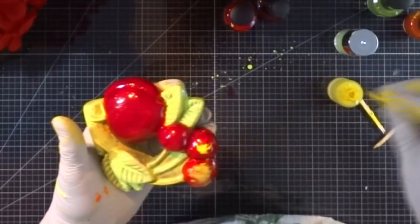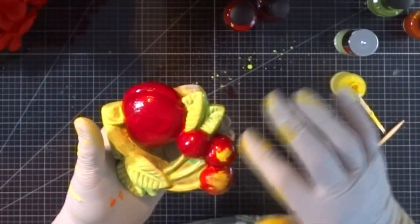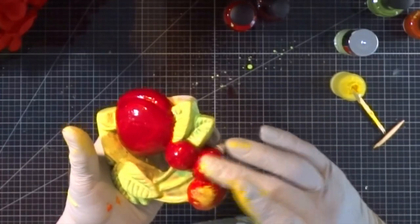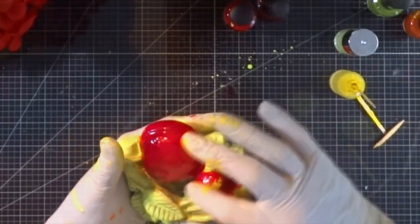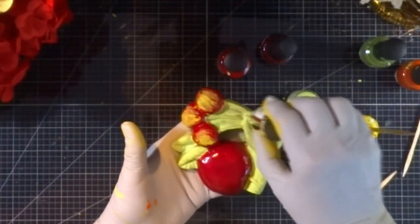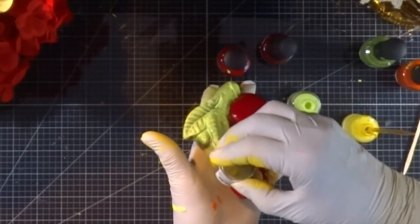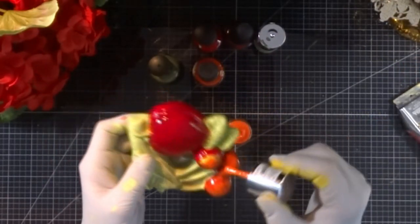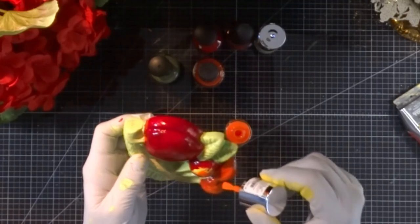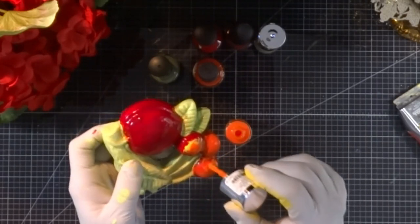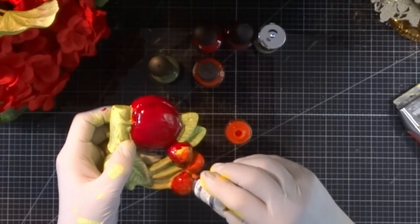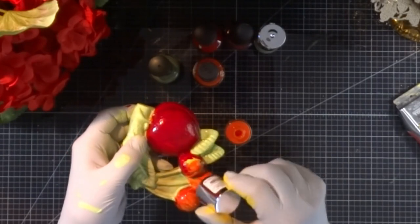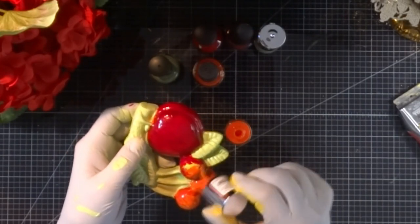On the cherries I'm going to highlight the areas where the sun will kiss the fruit with this little bit of yellow and give it a little depth. The yellow will shine through the more transparent areas of orange and red and give it that natural speckled look that real fruit has.